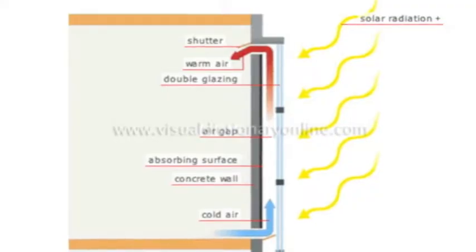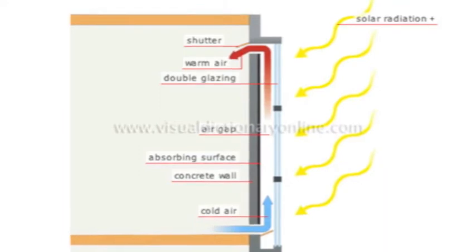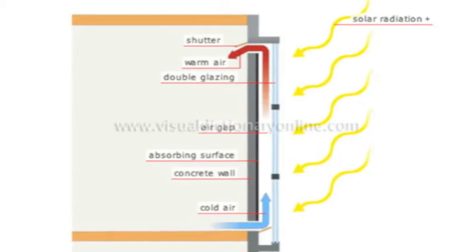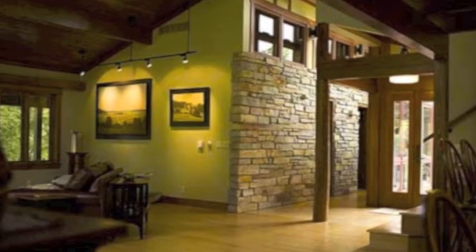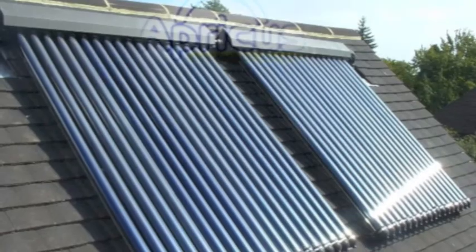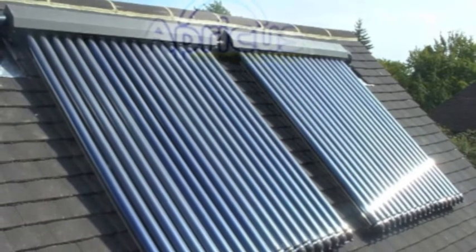A trombe wall is a passive heating system that uses an air channel between a window and a sun-facing thermal mass — concrete or stone — to collect heat from the sun, store it in the thermal mass, and then circulate the hot air through vents at the top and bottom of the wall. Medium energy collectors can be incorporated into a range of different areas.